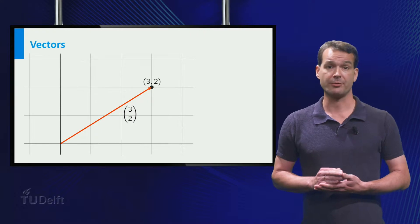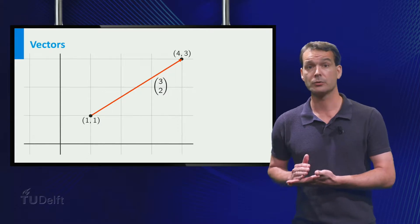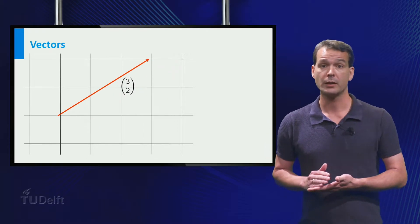Since vectors don't have a fixed starting point, this is also the vector from the point to, or for instance from to.